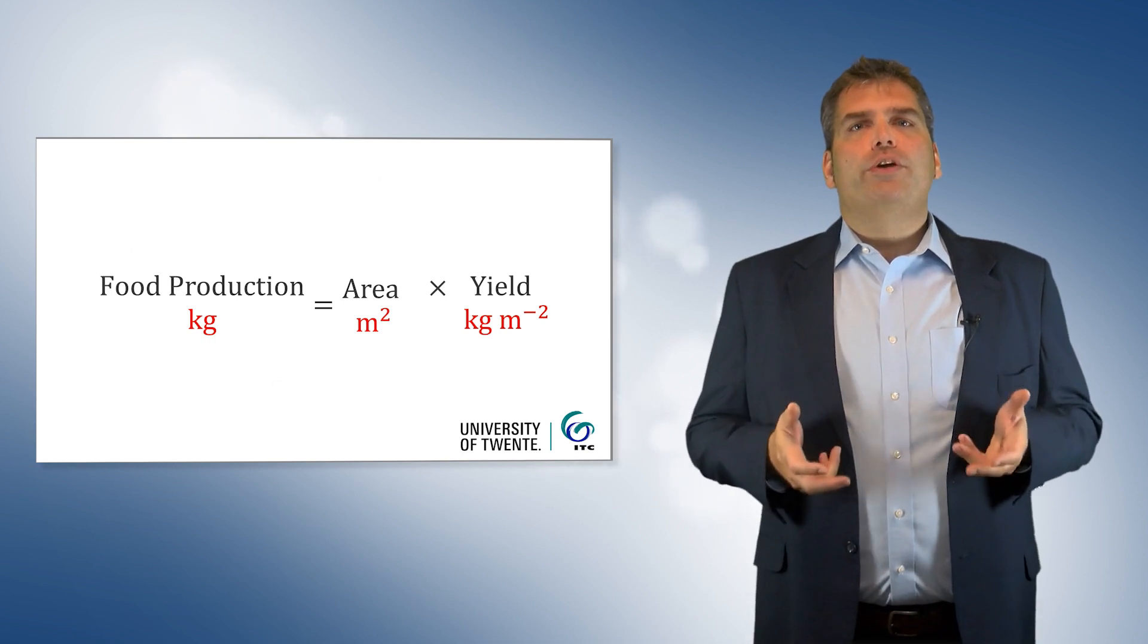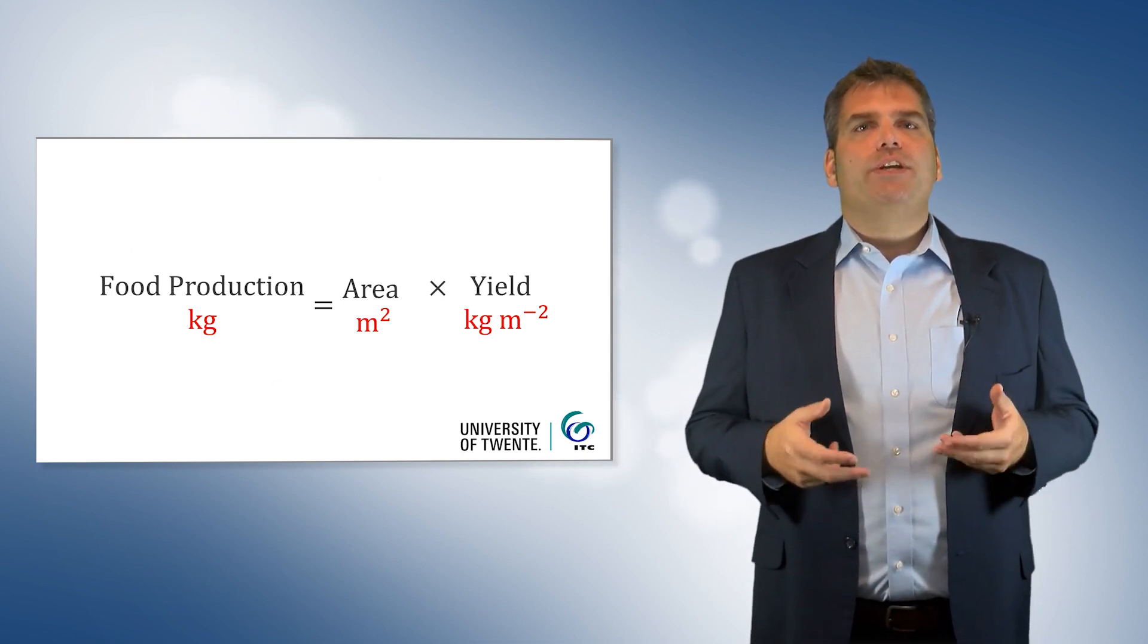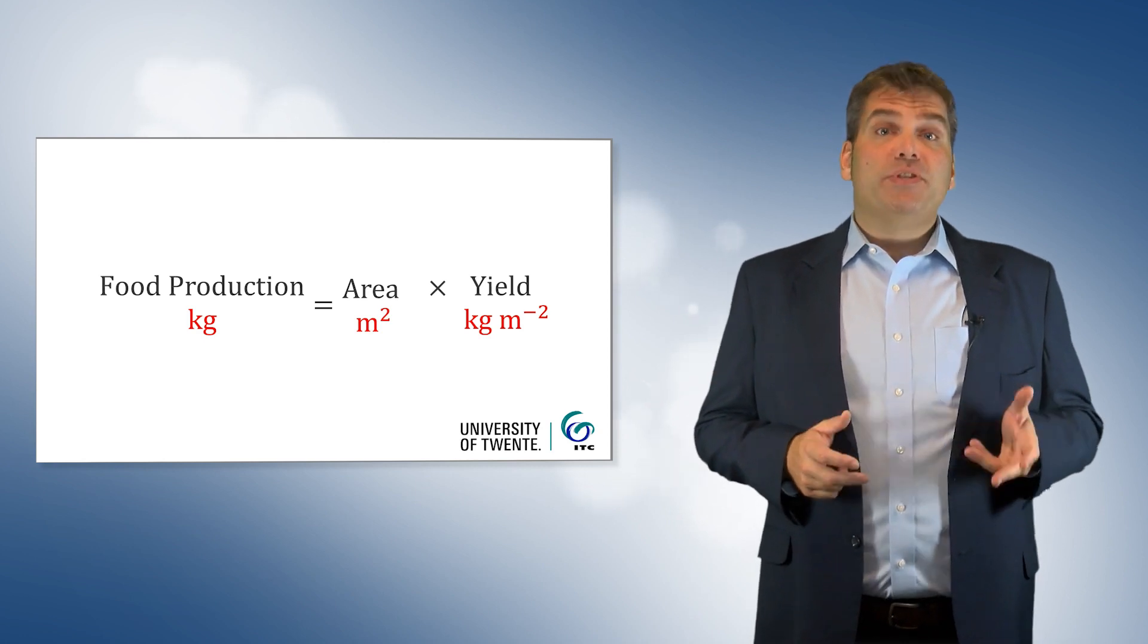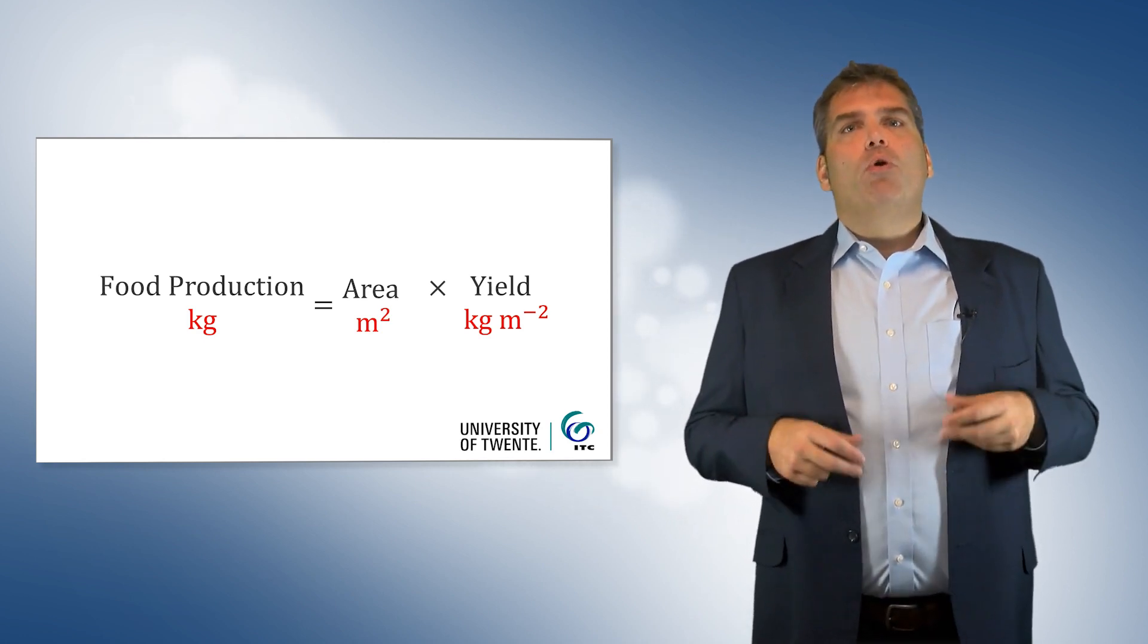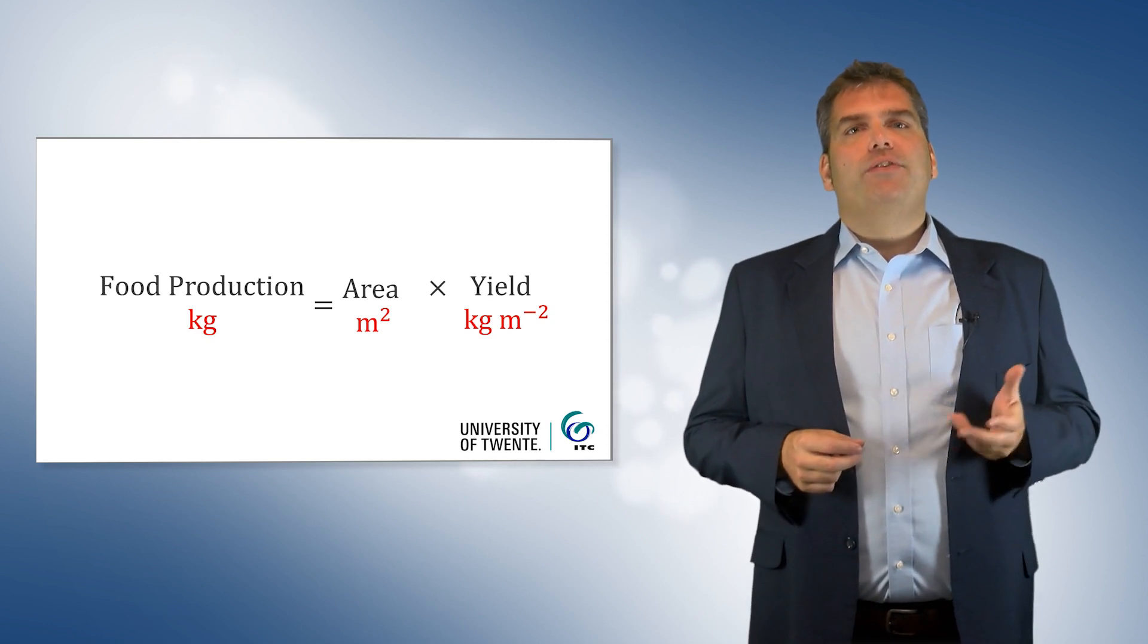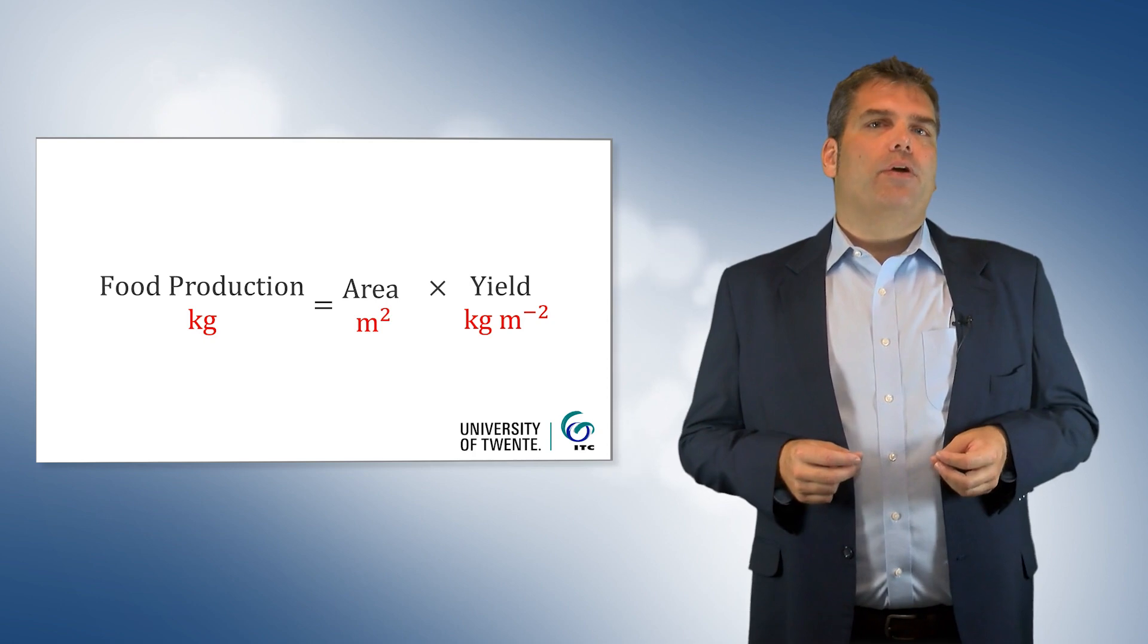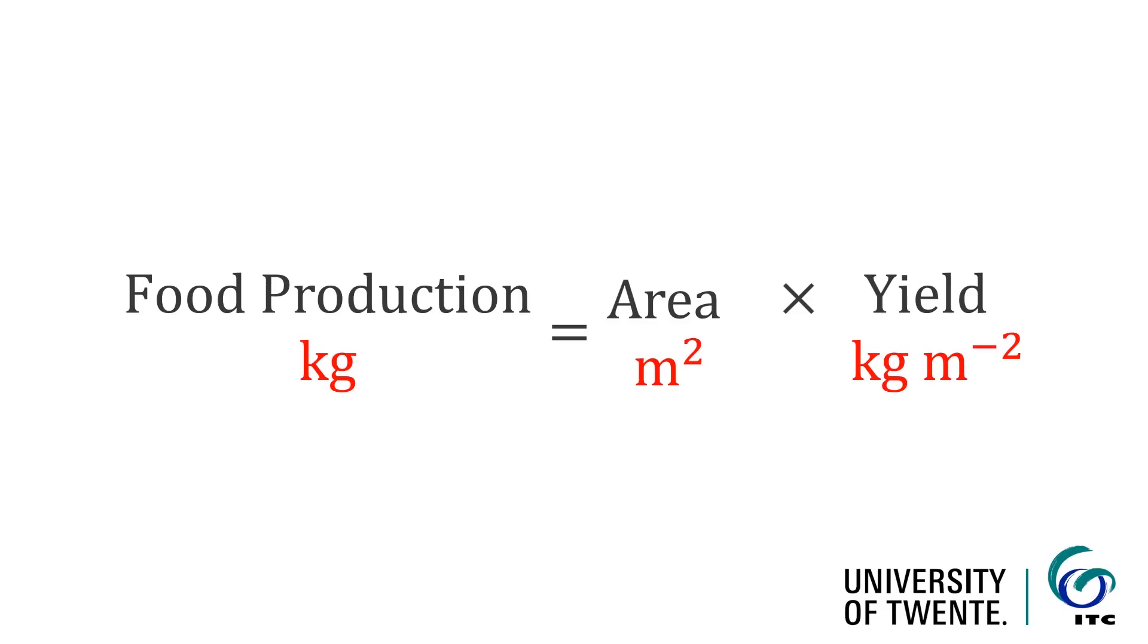For food security analysis, earth observation is almost exclusively used to estimate food availability, specifically the amount produced. More recent studies have combined these data with socioeconomic data to capture market access. Food production is defined as the harvested crop area multiplied by the harvested crop yield.